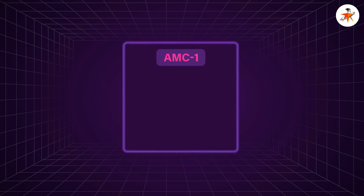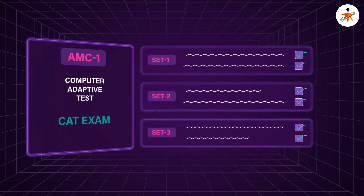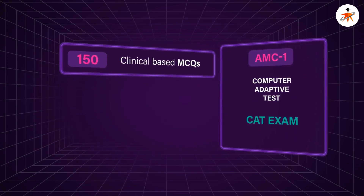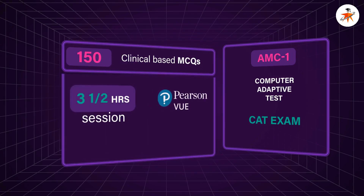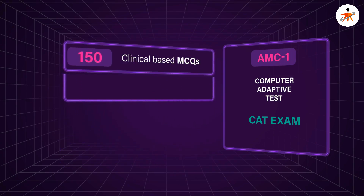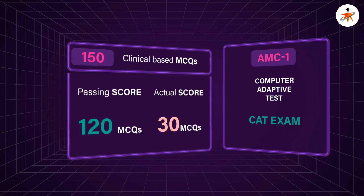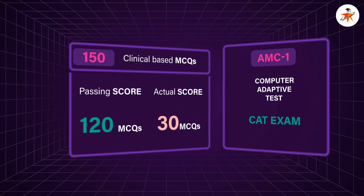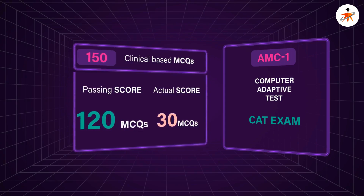Let's take the AMC exam first. It consists of two parts. AMC Part 1 is a Computer Adaptive Test, CAT exam, which means each test taker may be given a different set of questions based upon their ability or how well they are performing. The AMC CAT exam contains 150 clinical-based MCQs delivered in a single three-and-a-half hour session via Pearson VUE testing service worldwide. Each MCQ has five answer choices and you will be required to choose the one correct choice. 120 MCQs will count towards your passing score, whereas the remaining 30 do not count towards your actual score.